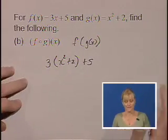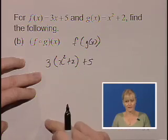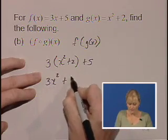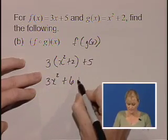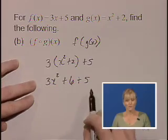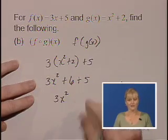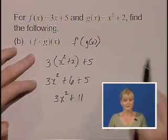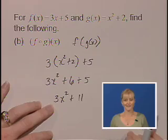And now we'll simplify. We're going to do a little distributive, as there's nothing inside the parenthesis to simplify. We'll have 3X squared. First multiplication: 3 times 2 is 6. Don't forget your last term. We'll combine some like terms. 3X squared — 6 plus 5 is 11. So the composition F of G of X simplifies to 3X squared plus 11.